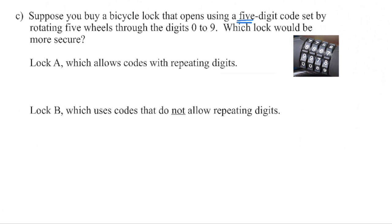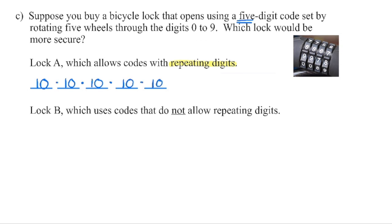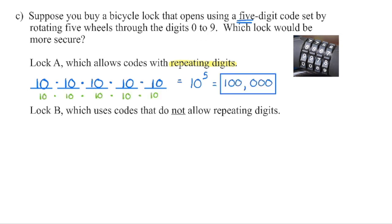We draw out the five stages to figure out how many choices we have at each. Using digits zero through nine, we have 10 possibilities for the first wheel. This particular question tells us that we can repeat digits, so if we use a seven here, we can use a seven again — still 10 possibilities for each remaining wheel. So we need the right number in each of the five positions: 10 times 10 times 10 times 10 times 10 is 10 to the power of five, which equals 100,000 possibilities for Lock A.